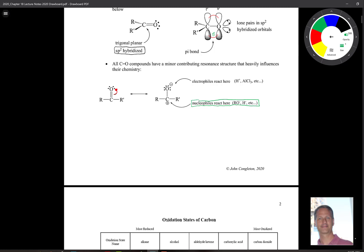So alkoxides, hydroxide, hydride, grignards, all sorts of other things that we'll see in this chapter. Whereas things that have positive charges tend to be attracted to the top of this molecule, to the oxygen up here. So hydrogens, aluminum trichloride, and other compounds that have an affinity towards negative charges.